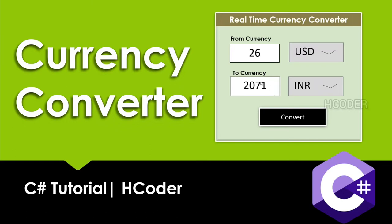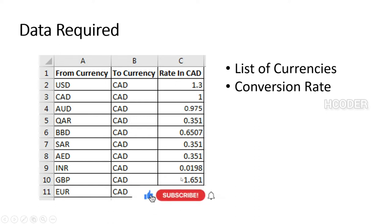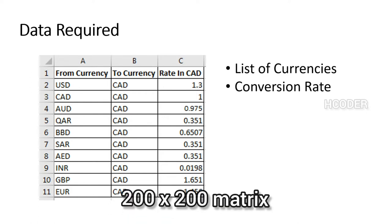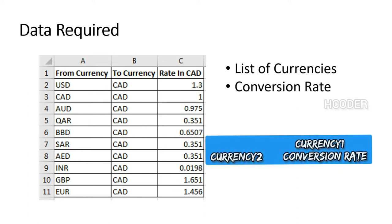Let's look at the implementation details. Typically we have input currency details, output currency details, and the rate of conversion. This rate of conversion is the important column that gives us the final value. For example, if you have one dollar and the rate of conversion for Canadian dollars is 1.3, it means one dollar equals 1.3 Canadian dollars. If you have 200 currencies, the conversion table becomes a 200 by 200 matrix, where each element represents the conversion rate for a particular pair.